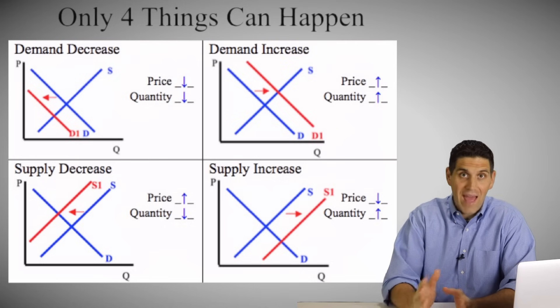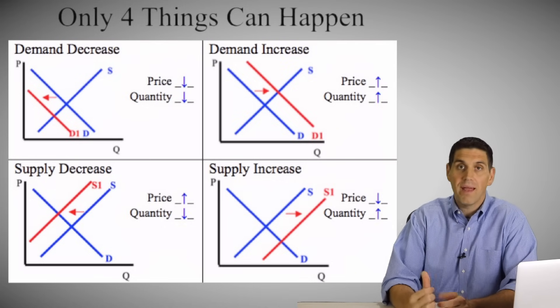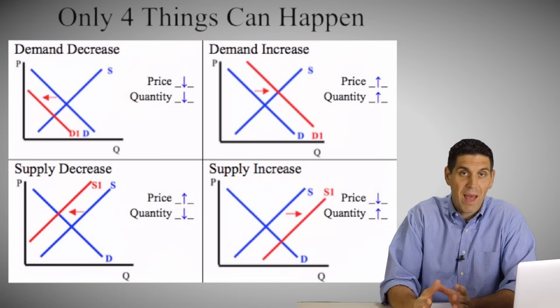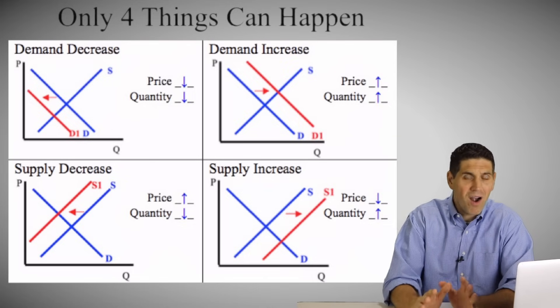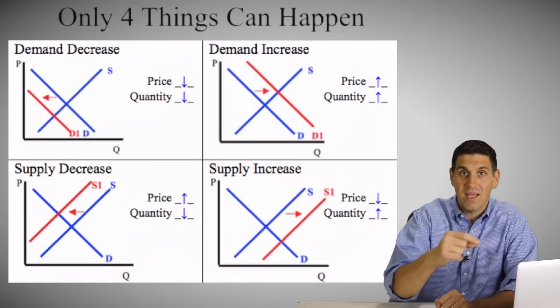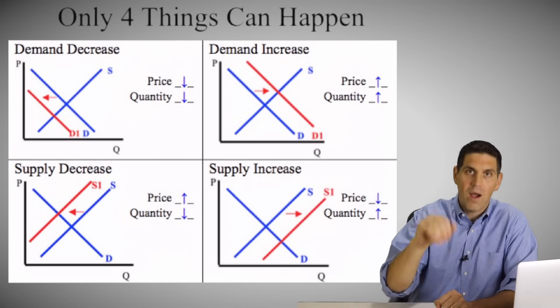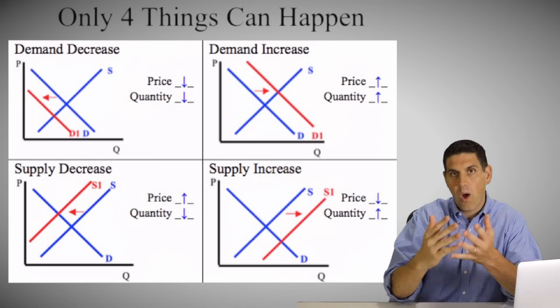Remember, there are only four things that can happen: demand can decrease, demand can increase, supply can decrease, or supply can increase — only four possible shifts. Just look at the graph. The best part of econ class is you can cheat: draw the graphs, the graph tells you what happens to price and quantity. Look at the original price and quantity, draw the shift, label the new price and quantity — price changes, quantity changes. This video is about reviewing and practicing, so I went way too fast. If you're totally lost on the idea of the curve shifting or moving along the curve, go back and re-watch supply and demand videos or review your notes.